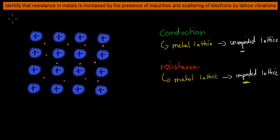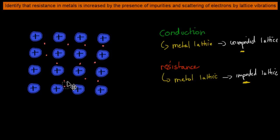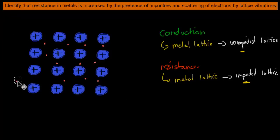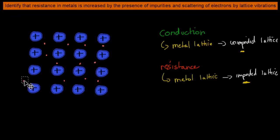These electrons, in the case of conduction, are moving without being attracted to positive nuclei or bumping into negative electrons — just moving from one side to the next in a perfect fashion. Whereas resistance means they come too close to a positive nuclei, get attracted, lose energy, or bump into a negative electron and get repelled, changing their direction and energy levels.